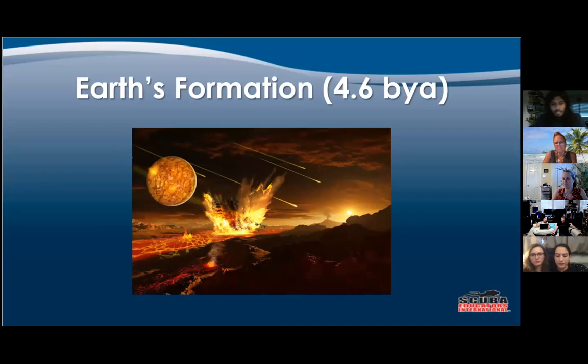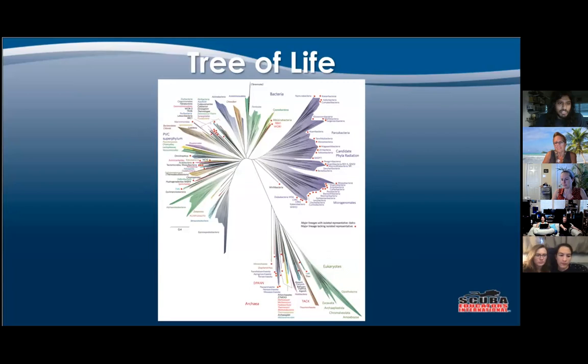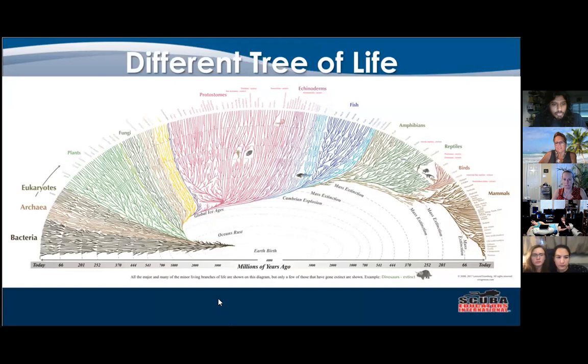This is where the tree of life starts, around 4.4 billion years ago. If you really look at this diagram, you can see that bacteria actually make up the large portion of the tree, and then archaea and eukaryotes are actually an offshoot and significantly smaller. Here's a different representation showing some major events like the oceans rusting, ice ages, and a couple of mass extinctions. I showed the first tree of life because it shows how versatile and varied bacteria are, even though this one focuses more on eukaryotes.